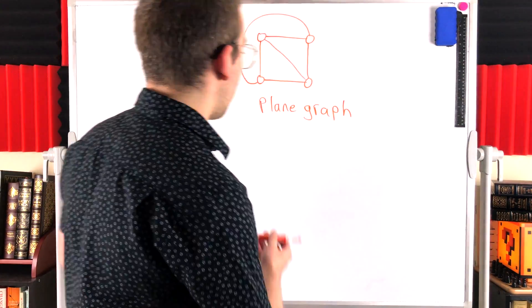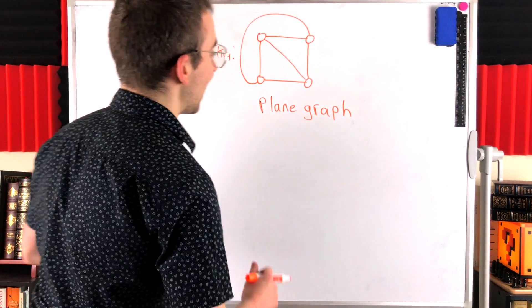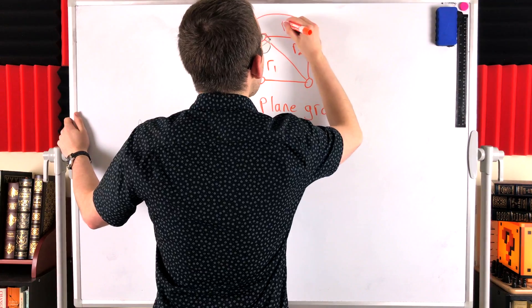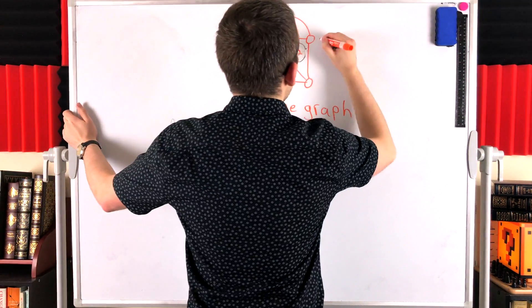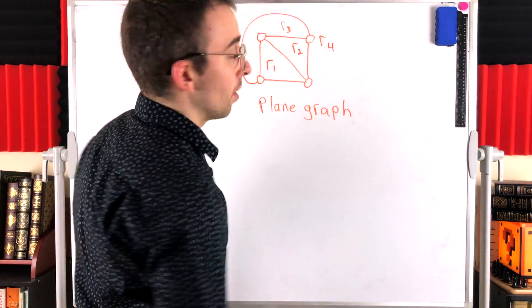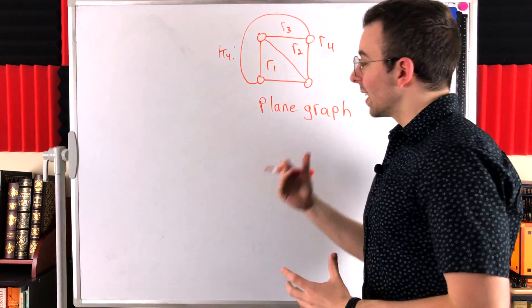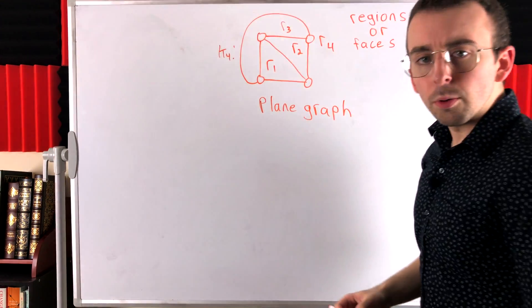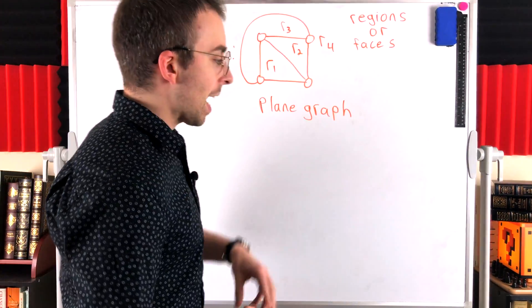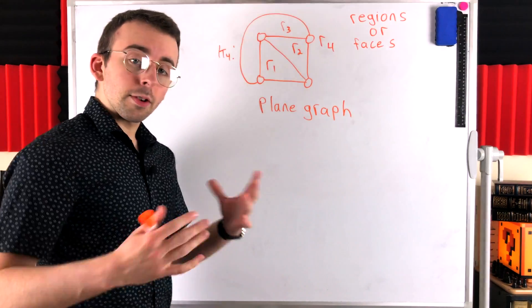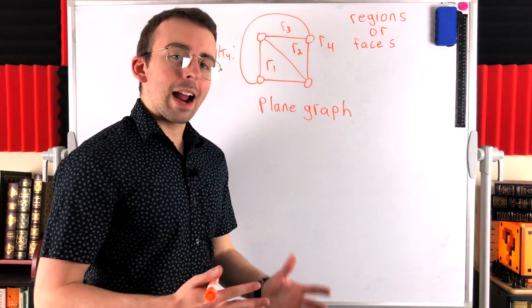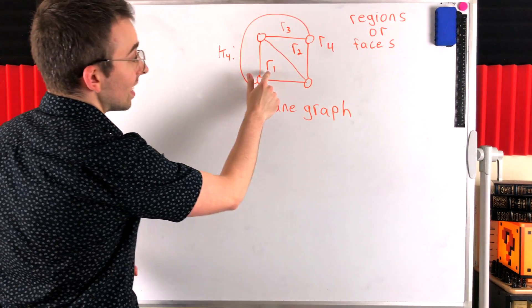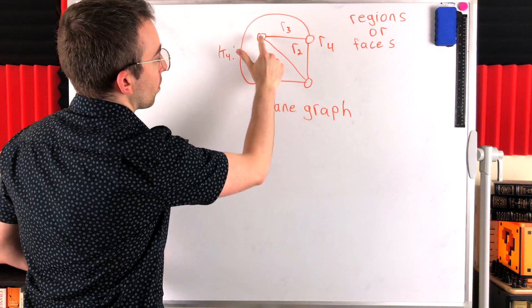One of the things we'll talk about a lot with plane graphs are the regions or faces that they divide the plane into. Notice this plane graph has four regions — we could call them R1, R2, R3, and then the unbounded exterior region R4 that consists of the rest of the plane. These areas or spaces that a plane graph divides the plane into are called the regions or faces of the graph. Another thing we'll be interested in are the boundaries of the regions. The boundary of a region is the subgraph — the set of vertices and edges — that are incident with the region. So for R1, that's this triangle here, a complete graph on three vertices.